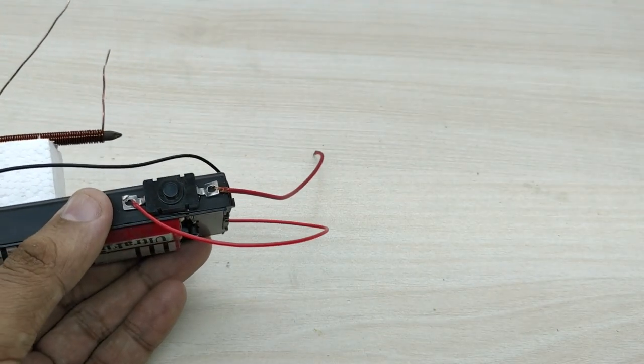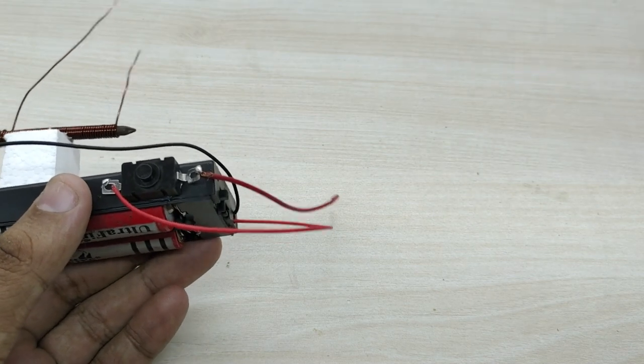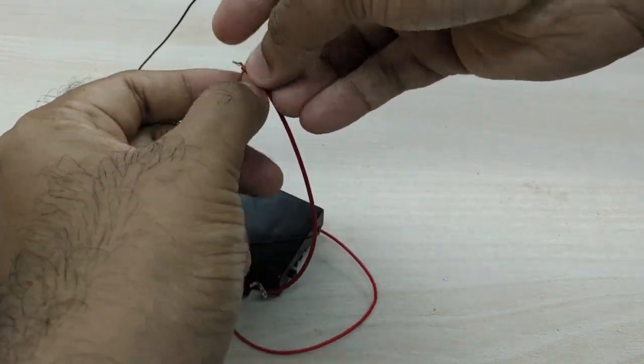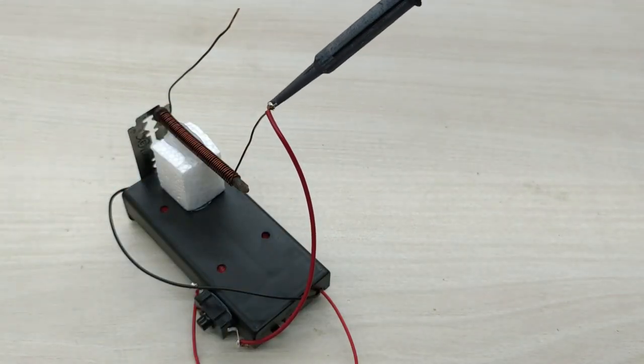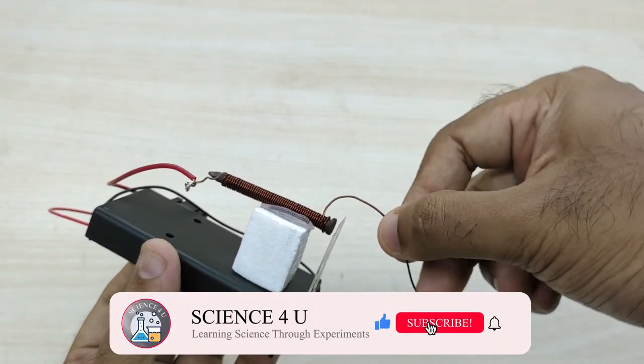Take another piece of wire and connect to other end of the switch. Connect the other end of the wire to one end of the enameled copper wire as shown. Now bend the other end of the enameled copper wire and bring it close to the razor blade so that it is just in contact with the razor blade.